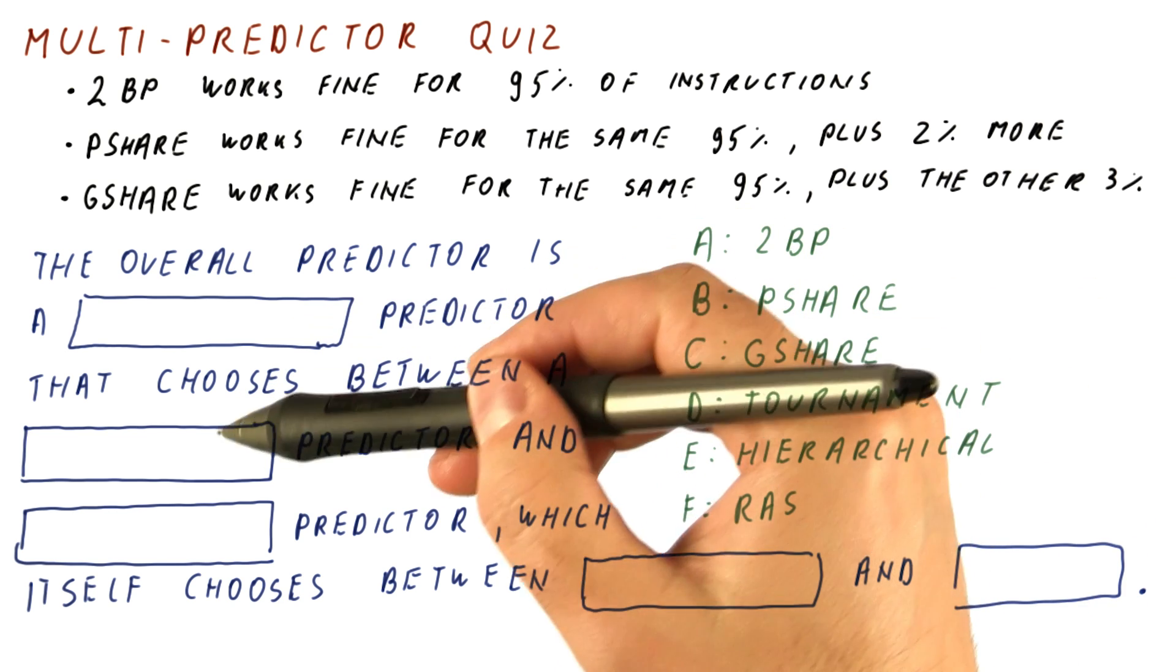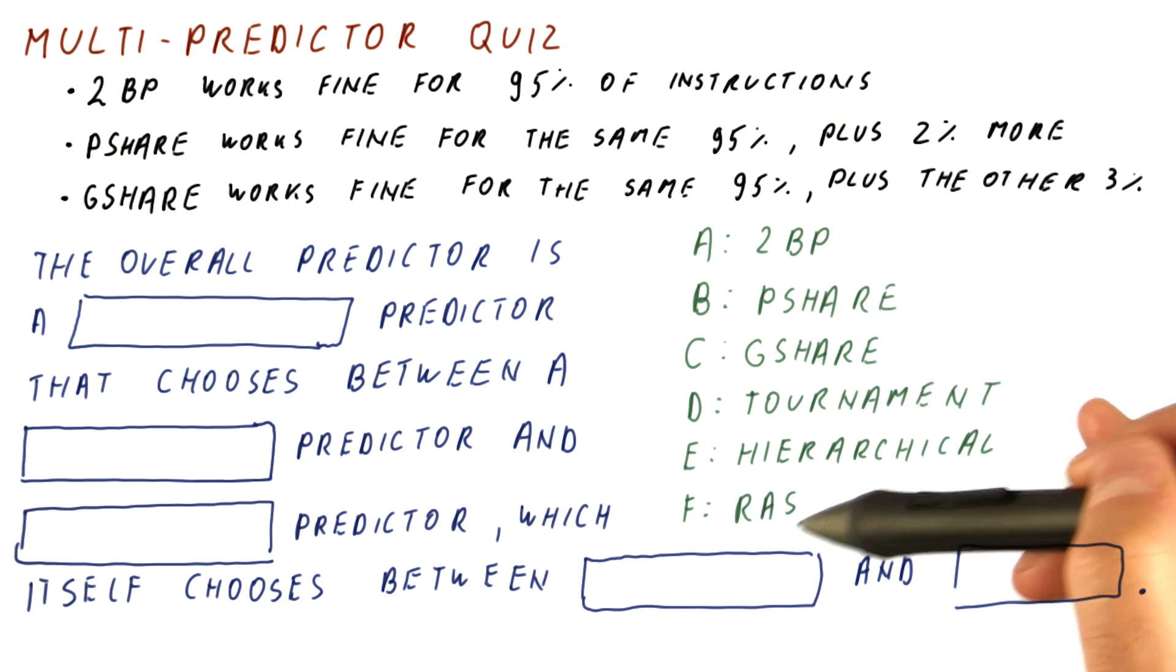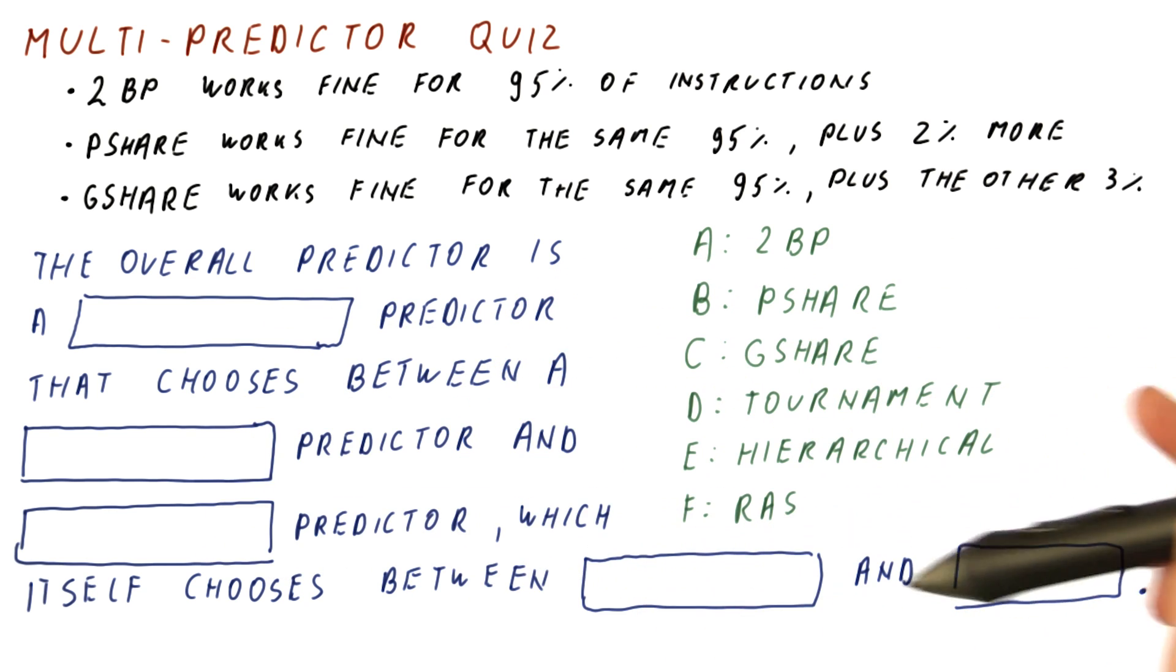So again, for each of these five boxes, put which letter corresponds to the predictor that is the right answer for that box.